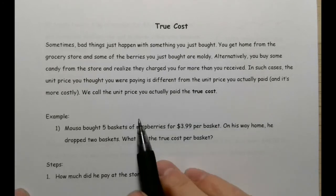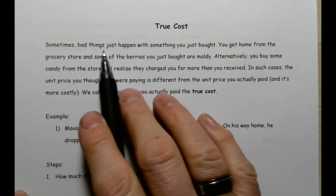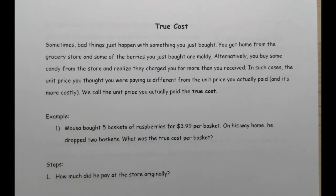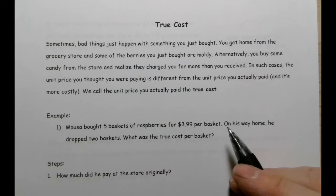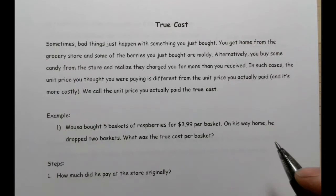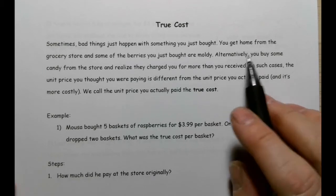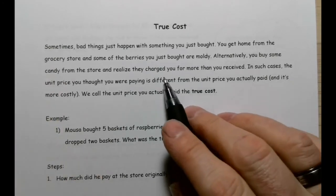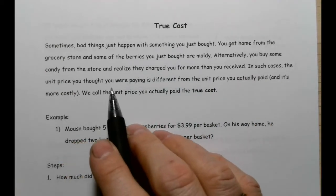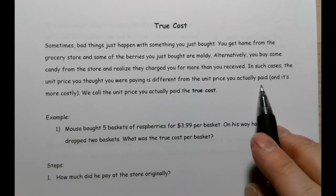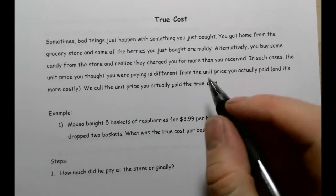Now we're going to take a look at true cost. Sometimes bad things just happen with something you just bought. You get home from the grocery store and you find out that some of the berries that you just bought were moldy. So you thought you had a whole container of berries, but some of them you just can't eat. Alternatively, you buy some candy from the store and realize that they charged you for more than you received. In such cases, the unit price you thought you were paying is actually different from the unit price you actually paid.